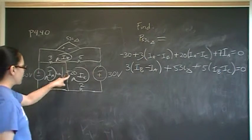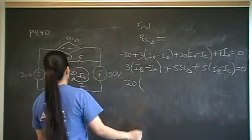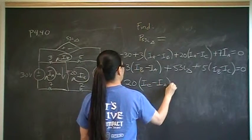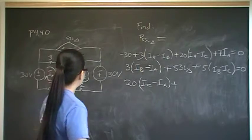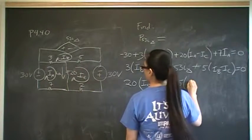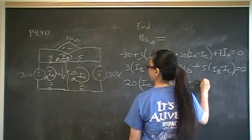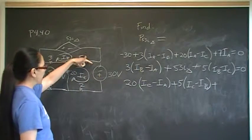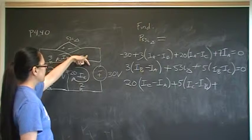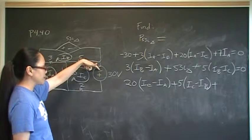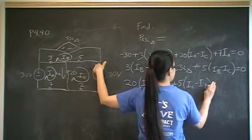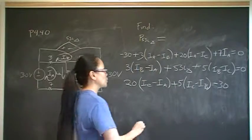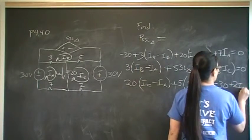For mesh Ic, starting at the 20 ohm resistor: 20 times the net current Ic minus Ia. Then across the 5 ohm resistor: 5 times Ic minus Ib. The next voltage encountered has positive current entering the negative terminal, so that's minus 30. And the final voltage drop is across the 2 ohm resistor: 2 Ic. All equal to zero.